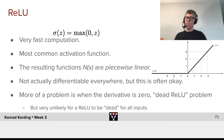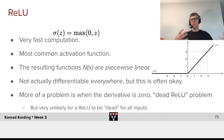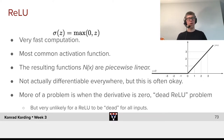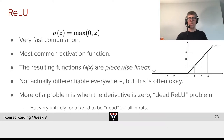If we initialized a ReLU so that for none of the training samples it would ever be active, it would always have zero gradient and therefore it would never learn anything. But it's pretty unlikely.